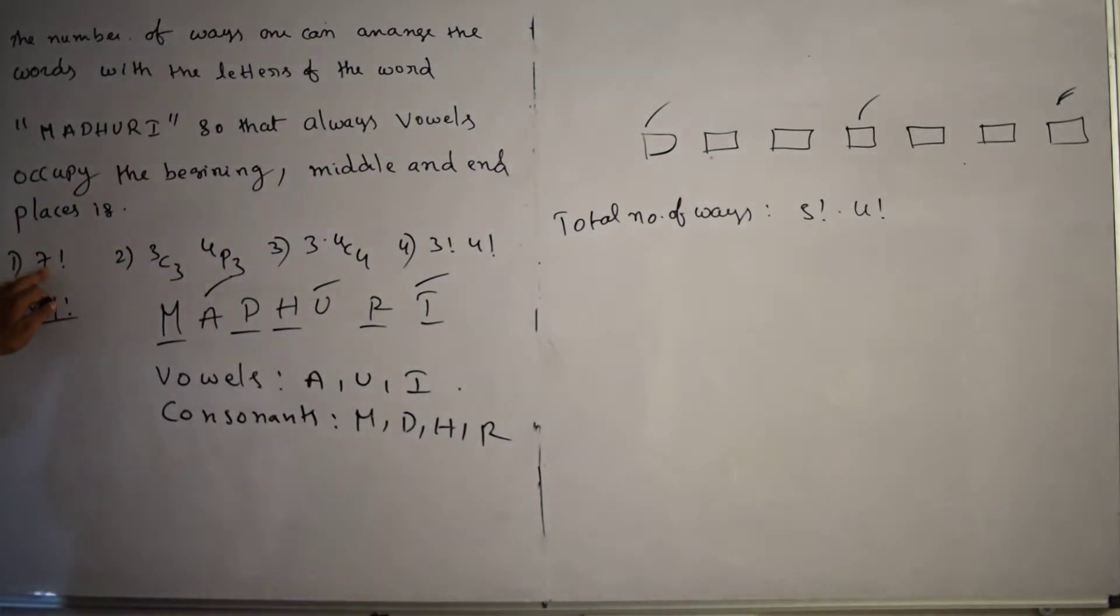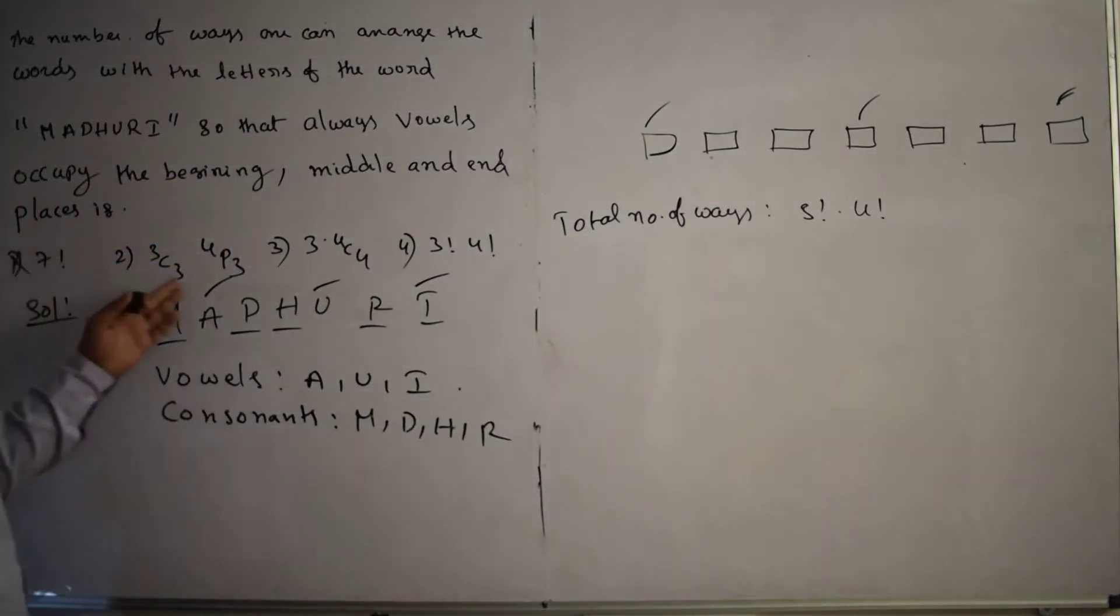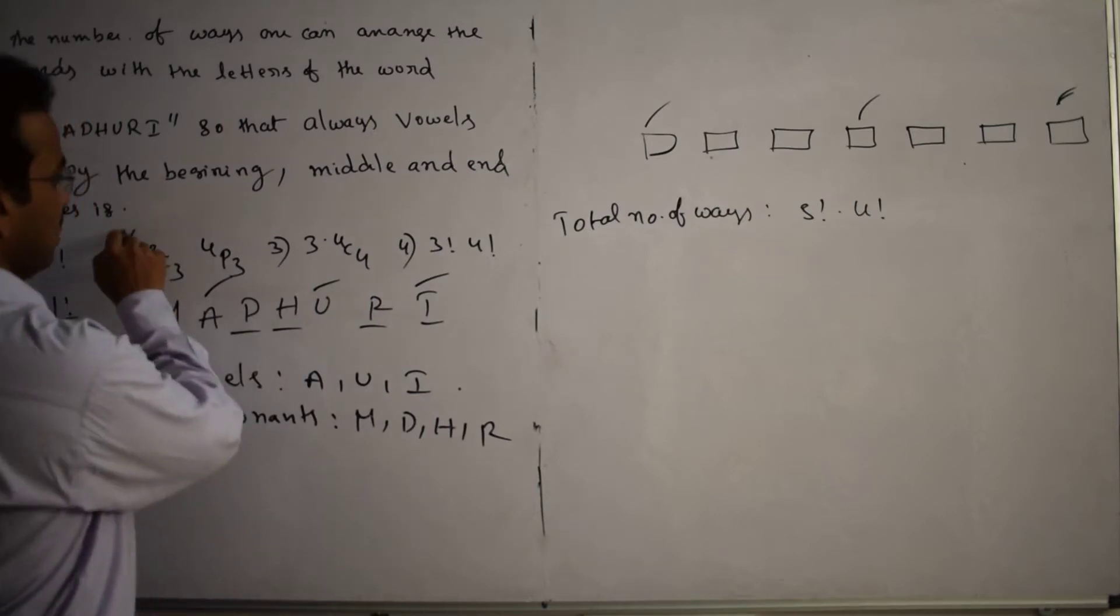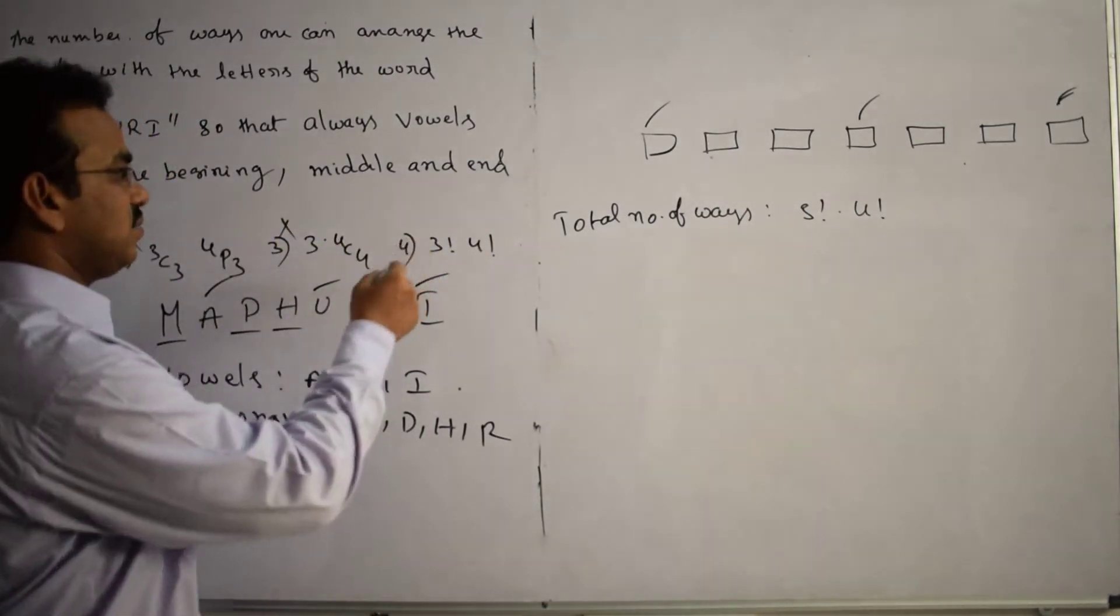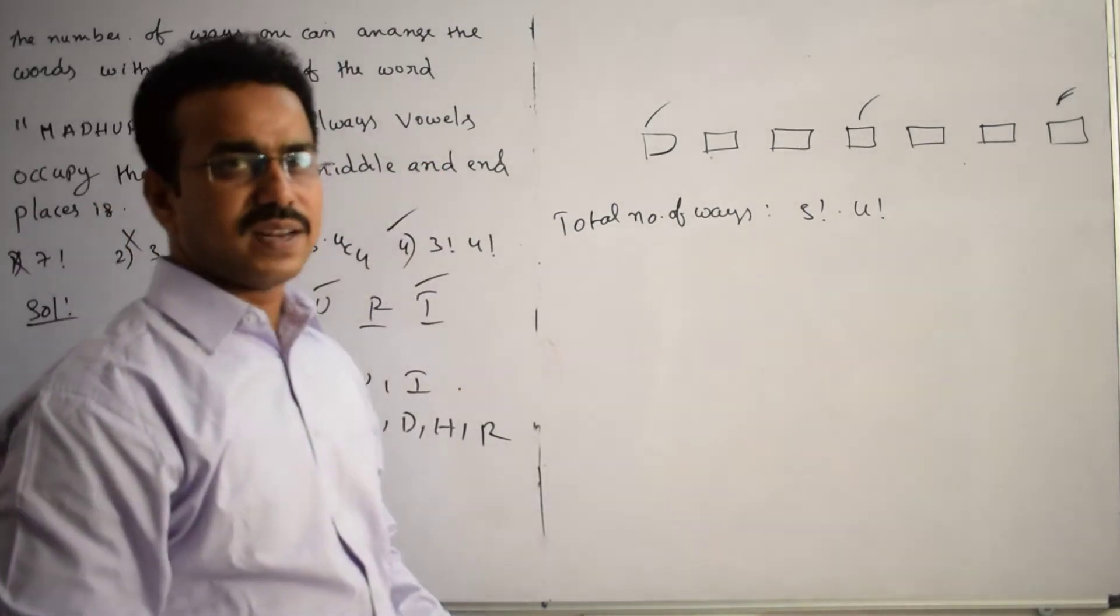What are the given options? Option one: 6 factorial, this is incorrect. Option two: 3C3 times 4P3, this is also incorrect. Option three: 3 times 4, this is also incorrect. Option four is the correct answer. This is the final conclusion.